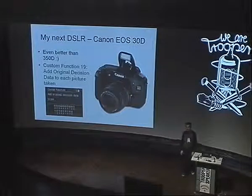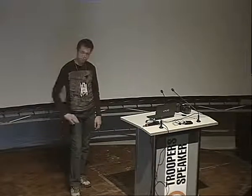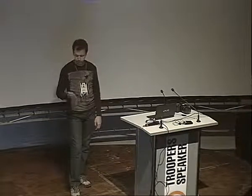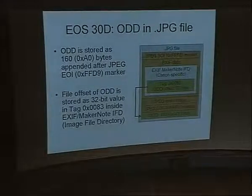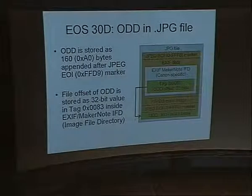Almost every modern digital single-lens reflex camera from Canon supports original decision data. All cameras produced from the year 2007 support it. To start my research, I made several images from my camera with original decision data enabled and disabled, then compared them. I discovered there are actually only two big differences between enabled and disabled original decision data.